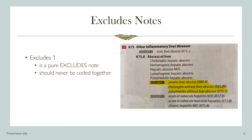Looking at this example, you can see that I have highlighted the excludes one note. Cholangitis without liver abscess, K83.09, is listed as something that a patient could never have along with an abscess of the liver. In this case, the coder would have to select either K75.0 or K83.09, but they cannot have both.